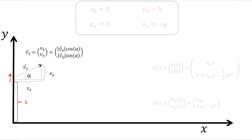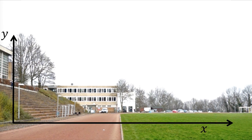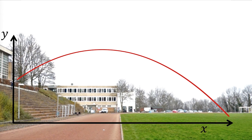Das Problem mit dem Bogenschützen ist, dass an der höchsten Stelle des Fluges, also bei t_max, zwar die Geschwindigkeit in y-Richtung gleich 0 ist, uns das zunächst aber nicht weiterhilft. Denn die Zeit, die der Pfeil vom Verlassen des Bogens bis zum höchsten Punkt braucht, ist ungleich der Zeit vom höchsten Punkt bis zum Auftreffen auf den Boden – eben dadurch, dass der Bogenschütze um eine Höhe h gegenüber dem Boden versetzt ist. Wir brauchen also eine andere Gleichung und nehmen den Zeitpunkt, an dem der Pfeil auf dem Boden aufkommt. An dieser Stelle ist nach der gesamten Flugzeit t_flug die y-Komponente gleich 0.